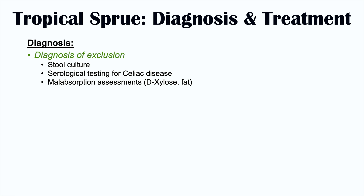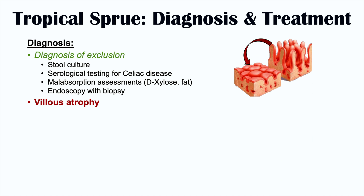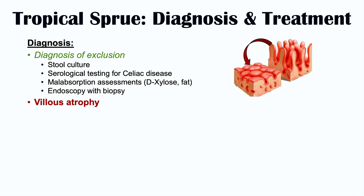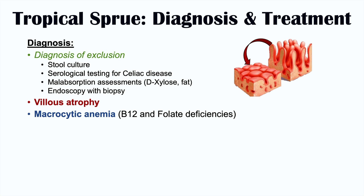In tropical sprue, steatorrhea — fatty stool — is common. Endoscopy with biopsy is also indicated, both to rule out other possible causes and to look at the structure of the small intestine. With tropical sprue, endoscopy reveals villus atrophy. The villi are the finger-like projections off the small intestine that increase surface area and allow increased absorption. When there is atrophy, the villi become flattened and we lose the ability to absorb nutrients.